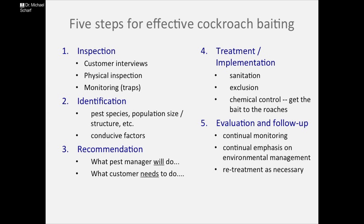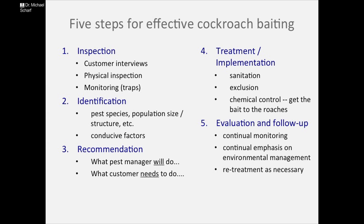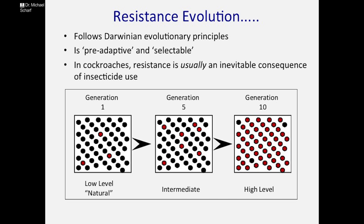When repeated control failures occur, that's when we can start to ask: is resistance an issue here? So what exactly is resistance? We can define it a lot of different ways, but I like to define it as a control failure that results from repeated use of the same insecticide over and over again. In the lab we can study resistance and see how cockroaches adapt very quickly, but that doesn't always equate to control failures. From my applied perspective, I define resistance as a control failure.